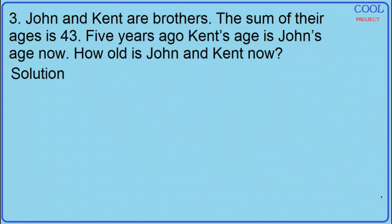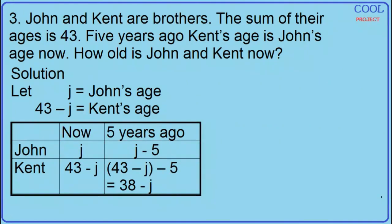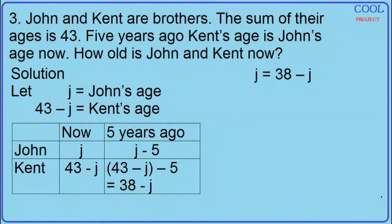Solution: Let J equal John's age. Five years ago, John's age was J minus 5, and Kent's age was 43 minus J minus 5, which is equal to 38 minus J. The equation is J equals 38 minus J.